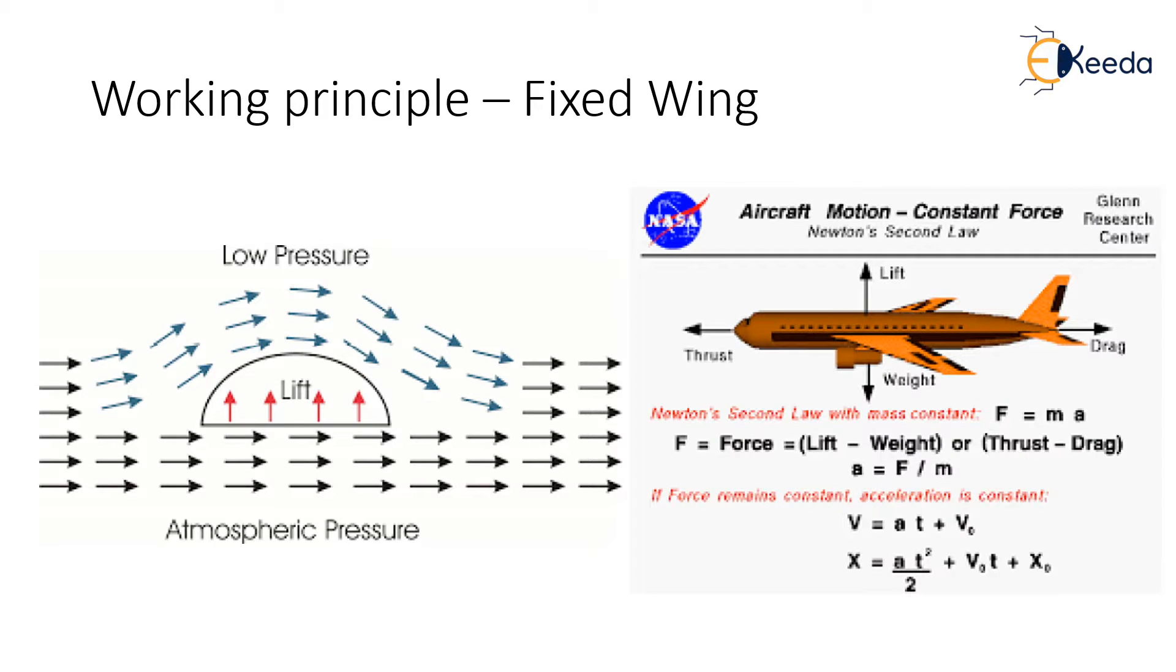To start with, let's understand the working principle of fixed wing and quadcopter. In the present slide, we understand the working principle of the fixed wing. Fixed wing drones follow Bernoulli's principle. According to him, airplane flies because of the shape of the wing, also called an airfoil, which is put in two parts: the leading edge and the trailing edge. Air passing above and below the wing at different speeds so that the air reaches the same point at the same time.